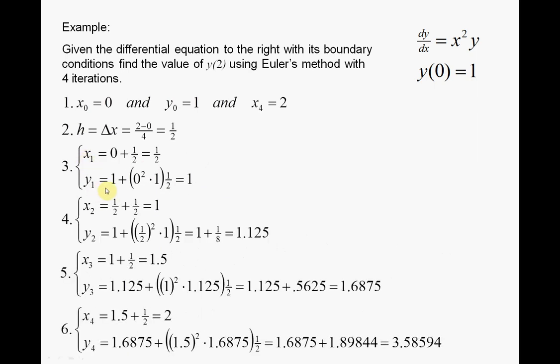So y1 is y0. y0 is 1 there. x0, y0. So x is 0 and y0 is 1. So 0 squared by 1 by the strip width, which is a half. So that goes to 0. A half times 0 is 0. And so we end up with 1.